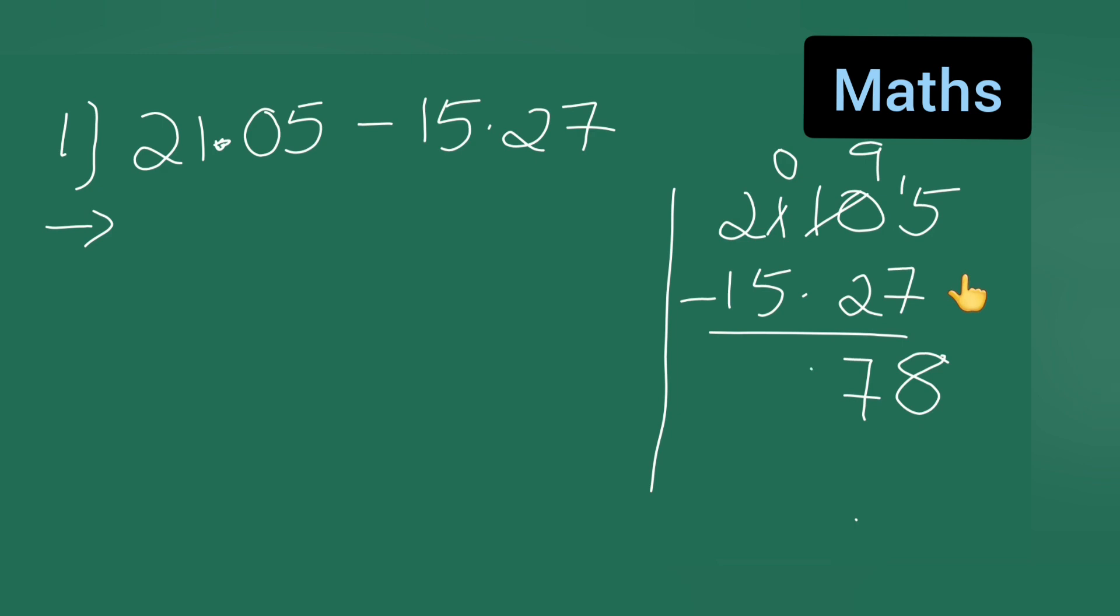Point. Now here give this one to this one, so 10 minus 5 will be 5, and then 1 minus 1 will be 0 which has no value. Then plug this point over here. So basically what you'll have to write is 21.05 minus 15.27.